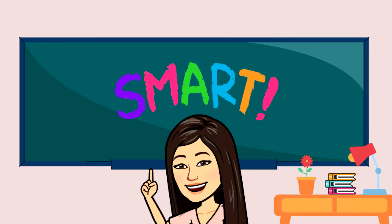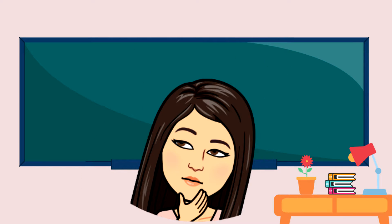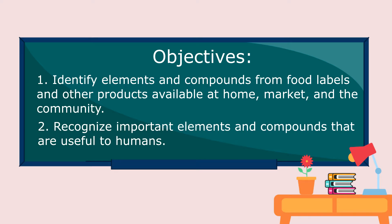You all did it well. So let us now have another interesting lesson. So what are we going to learn today? 1. Identify elements and compounds from food labels and other products available at home, market, and the community. 2. Recognize important elements and compounds that are useful to humans.